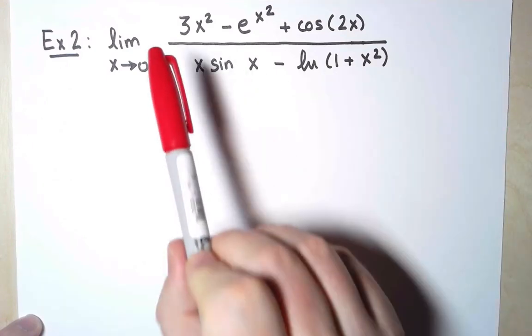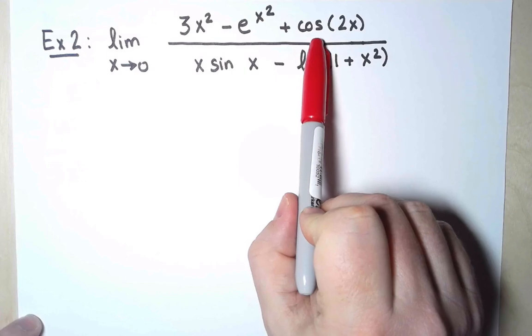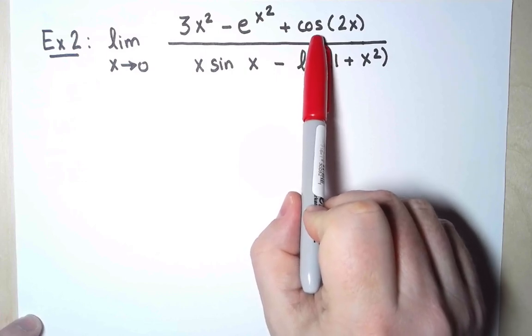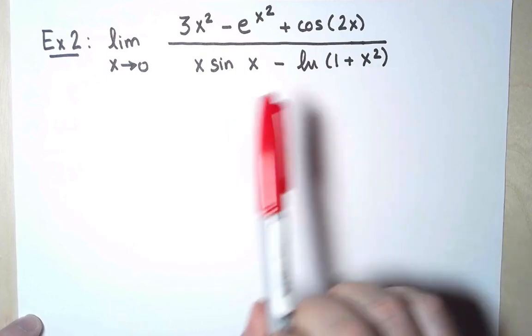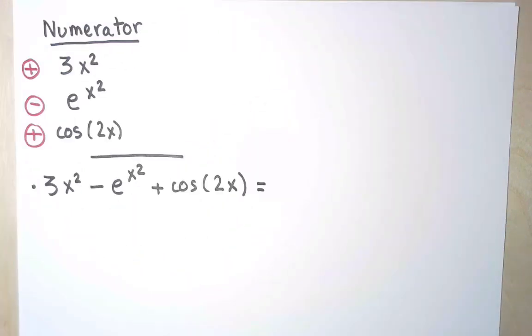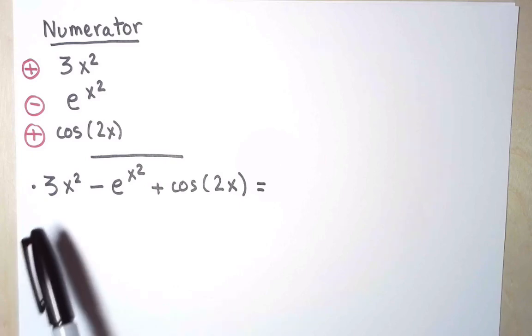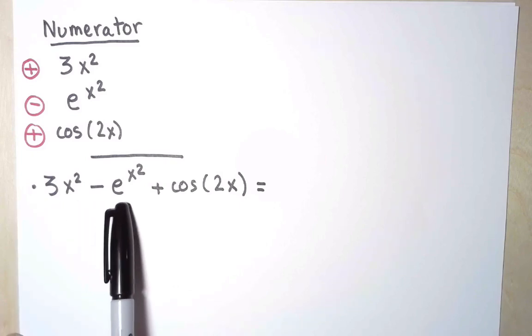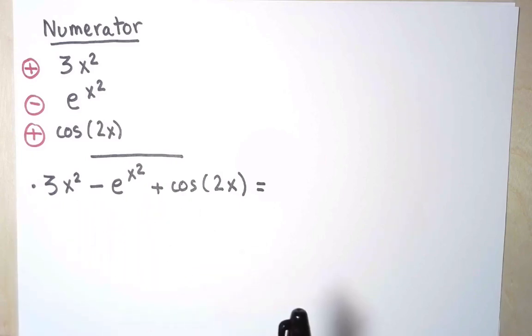Following the previous example, what I want to do is take the numerator and write it as a power series centered at 0, but I only care about the smallest non-zero term, and then I stop. And then for the denominator, I will also look for the smallest non-zero term, and then stop. In the numerator, I have the sum of these three terms, 3x² - e^(x²) + cos(2x), and I can write each one of them as a power series centered at 0.